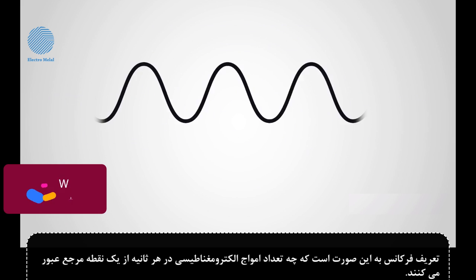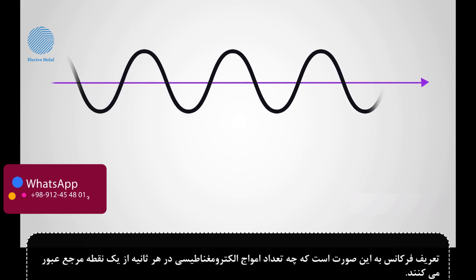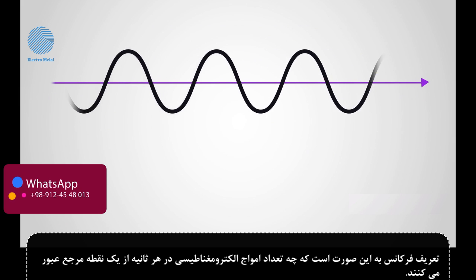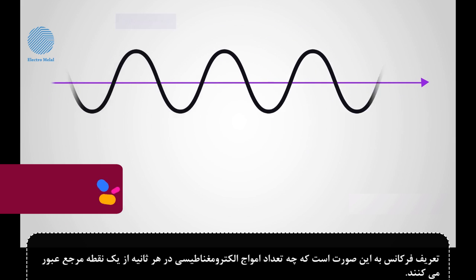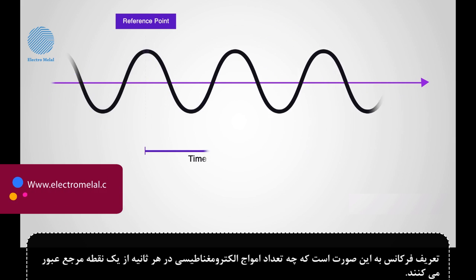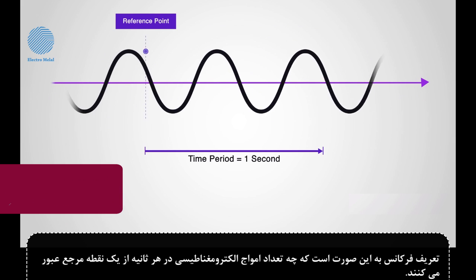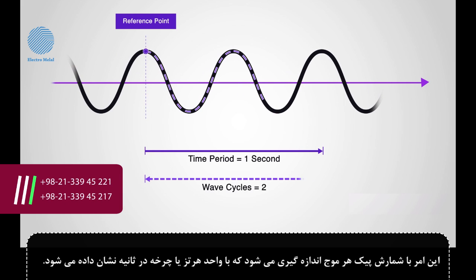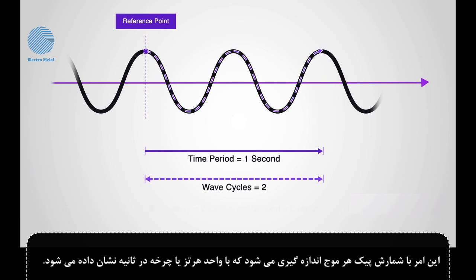Frequency is about how many electromagnetic waves pass through a point of reference every second. This is measured by counting the peaks of each wave, which will be measured in units of Hertz, or cycles per second.